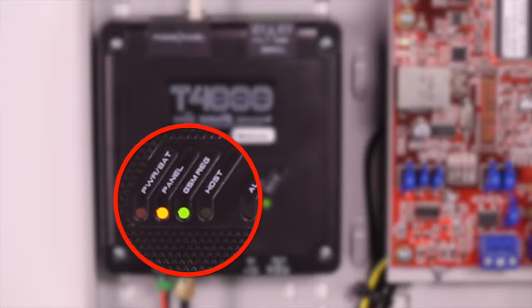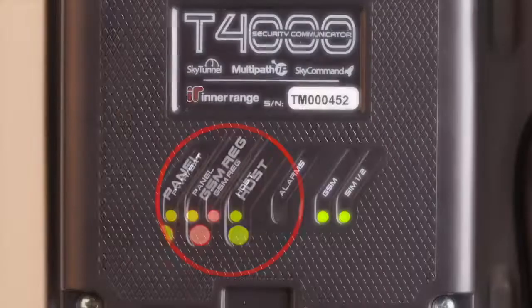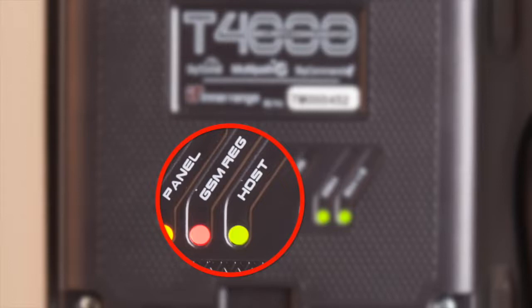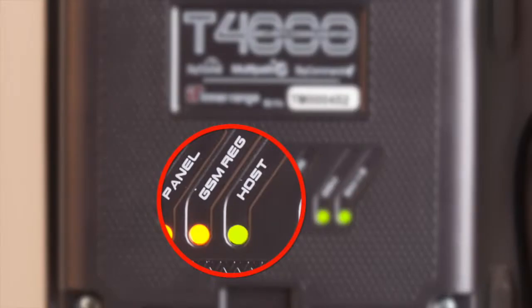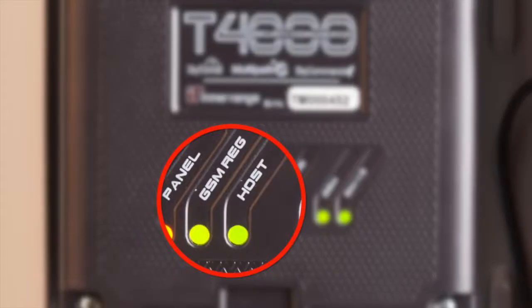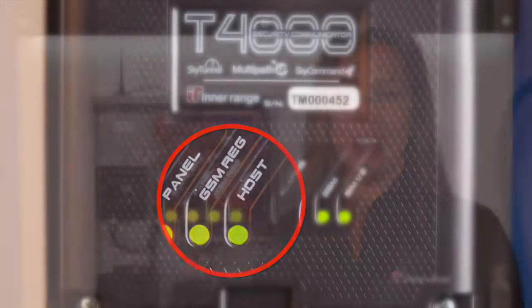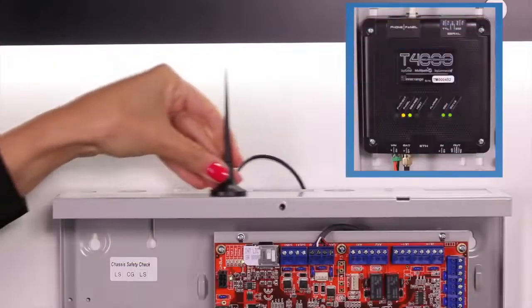The color of the GSM reg LED indicates the GSM signal strength. Red indicates that you should try to get a better signal. Yellow indicates an acceptable signal strength. Green indicates excellent signal strength. The GSM reg LED is great for identifying the best signal available by moving the antenna and keeping an eye on the LED color.